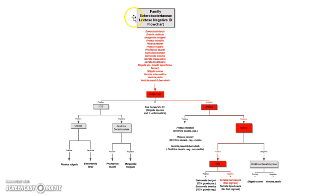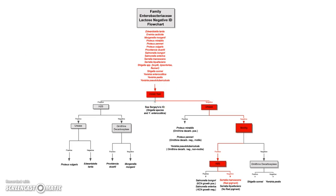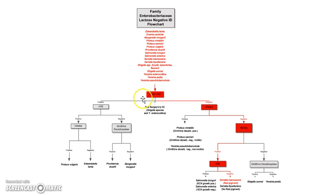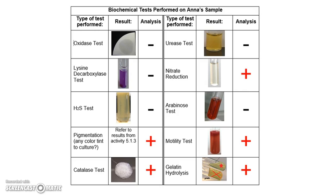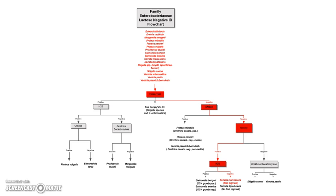This third and final flow chart is for any of the bacteria found in the Enterobacteriaceae categories. The third test we're going to need to look at is the indole test. Ana's indole test results were negative, so we're going to go back to the flow chart and go to the negative — the left is positive, on the right is negative. That brings us to the urease test. Ana's urease test shows negative results, so we're going to go to the right again.